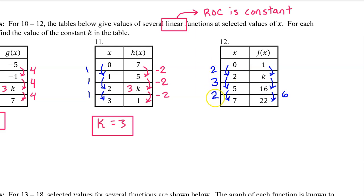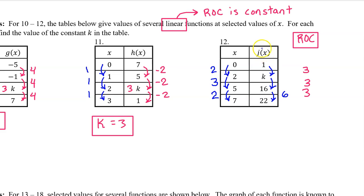For number 12, here are the input value changes and the one output value change we know. Be careful — this time we do not have consecutive equal length input value intervals, so we have to actually calculate the rate of change. The average rate of change is the change in output divided by the change in input. For the last interval, the average rate of change is 3. Since j of x is linear, the rate of change is constant at 3 for every interval. So the output value change for the first interval must be 6, giving us 6 divided by 2 equals 3. A change of 6 takes us from 1 to 7, so k equals 7.